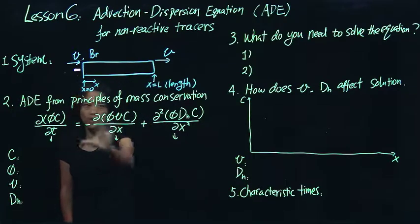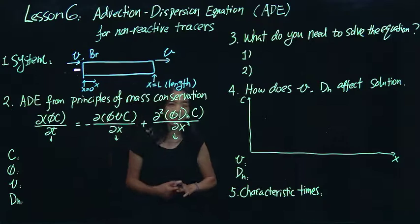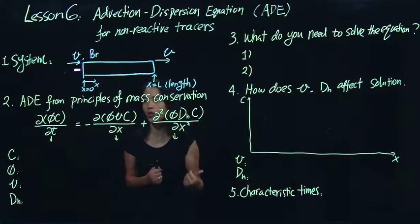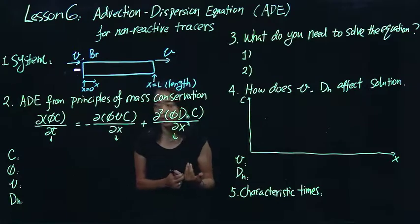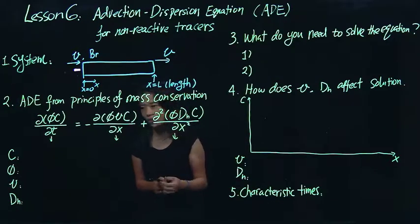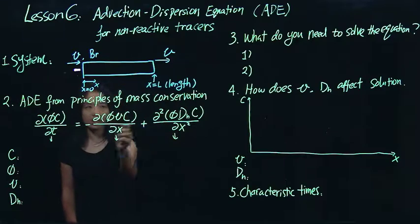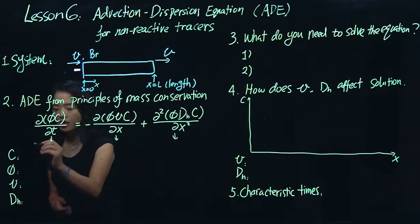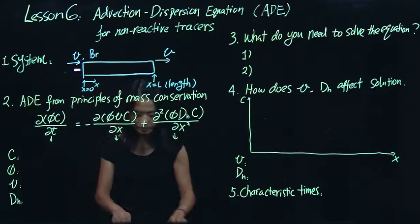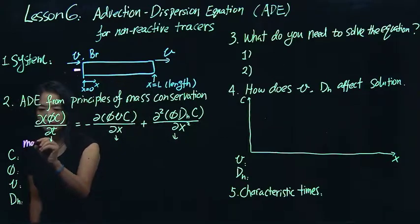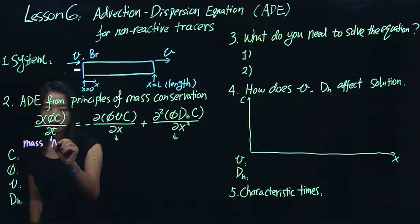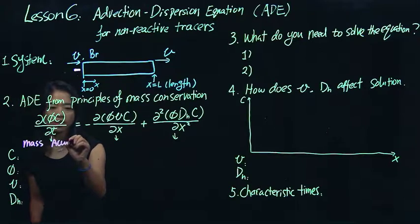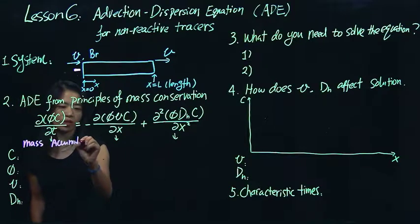So ADE, when we think about, I'm not going to derive in detail where this equation is coming from. In general, these equations are coming from mass conservation principles. So if we look at the different terms of ADE, the first term we call the mass accumulation term.